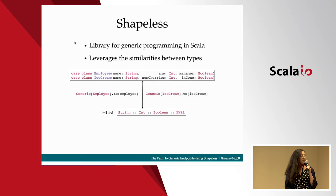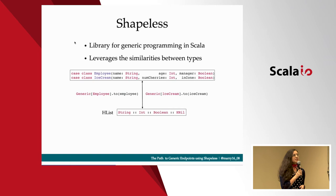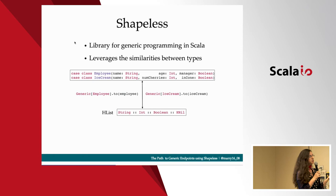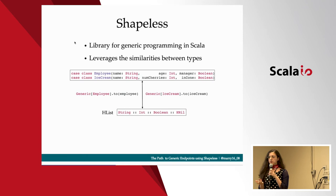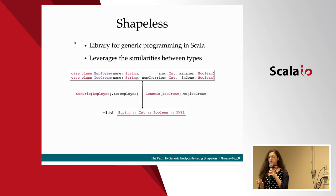As soon as we dropped reflection, someone mentioned Shapeless. Shapeless is a very popular library for generic programming in Scala. Think about generic programming as programming with types you know nothing about. Shapeless gives you the ability to convert from a concrete type to a generic representation. This generic representation is an HList — a list where the type of every element is statically known at compile time. Think of HLists as tuples, but with head, tail, map, flatMap, and all the other operations you usually have on lists, plus others.